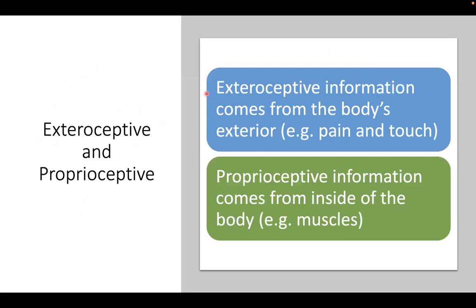When we say exteroceptive, this is information that comes from the body's exterior, such as pain and touch. Proprioceptive information means information that comes from inside the body, such as information coming from the muscles. Please remember this.